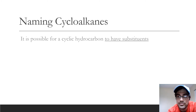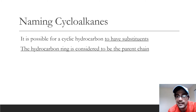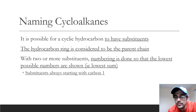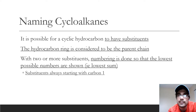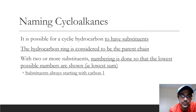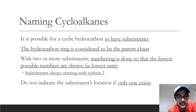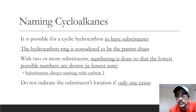When naming cyclic hydrocarbons, there can be other things attached to the ring, and the ring itself is the parent chain. If there is more than one substituent, one carbon is always going to be carbon number one, and just like with regular alkane naming, you want the lowest possible numbers on the substituents. If there's only one substituent, you don't necessarily need to write the number, but if there's more than one, you should include the numbers to be clear.